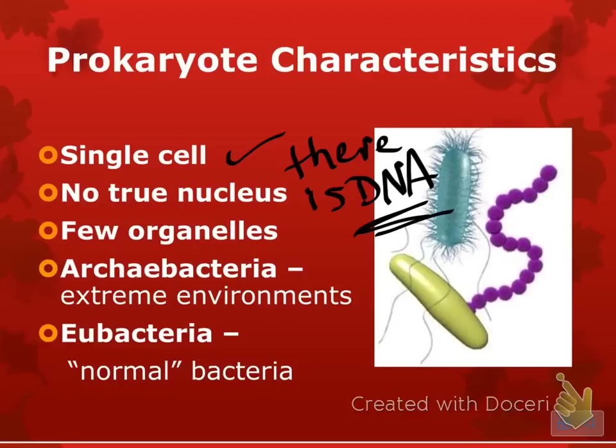There are two types, which we should know from the previous unit. We have archaebacteria, which are your extremes, and then eubacteria, which are your normals.